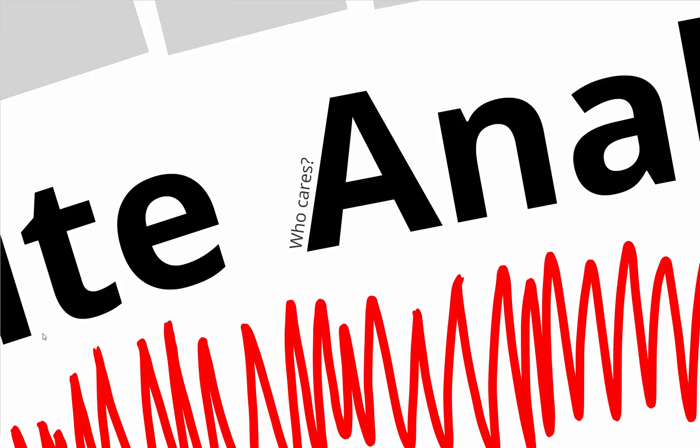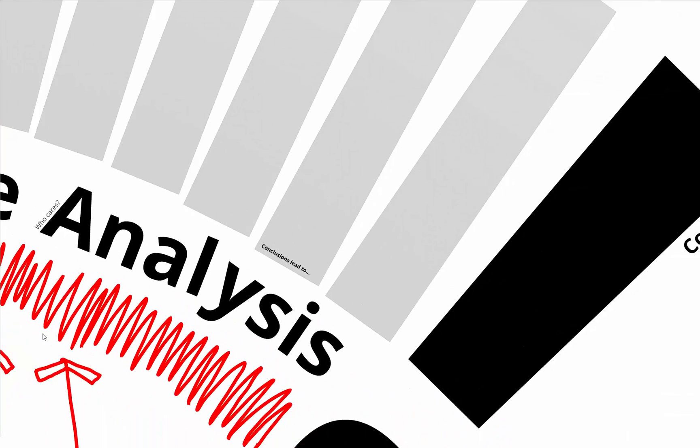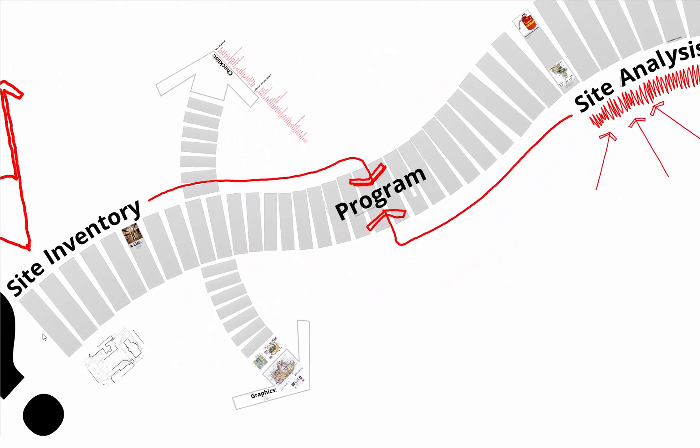An inventory and analysis is always based on your understanding of the program requirements — what is the design trying to achieve? That also gets back a little bit to your design intent, your big idea for what you're going to do. Site analysis is really about: so what? You've got this information about the site, but we're trying to get you to think about how that information is going to inform your design.